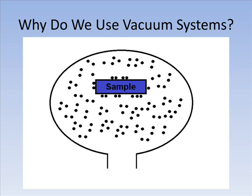High vacuum and UHV are vacuum regimes obtained in advanced vacuum systems, but why do researchers go through the trouble of creating these extremely low-pressure environments? There are a number of applications that require the use of high and ultra-high vacuum systems, because of the incredibly low amount of interaction between experimental samples and low-pressure gases. At atmospheric pressure, gases interact with experimental samples, coating them with layers of contamination and changing the surface chemistry.